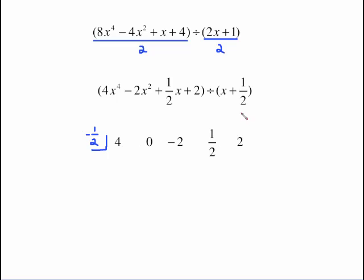So set up your synthetic. This is x plus a half. So this is a negative 1 half. Here's your coefficients. And we do need a placeholder here. There is no x cubed term. So that's why there's a placeholder here. Bring your 4 down and start your multiplication.